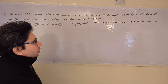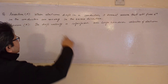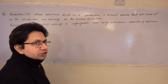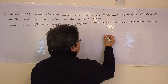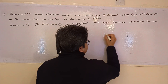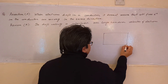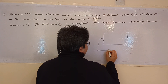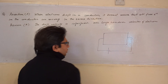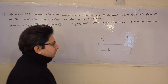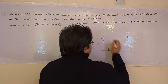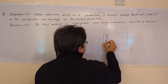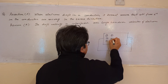In the assertion part, it is said that when electrons drift in a conductor. First of all, what is drifting? Drift means there is a conductor or a metal, and we apply a potential difference across it — or we can say an electric field across it — by some electrical source such as a battery.